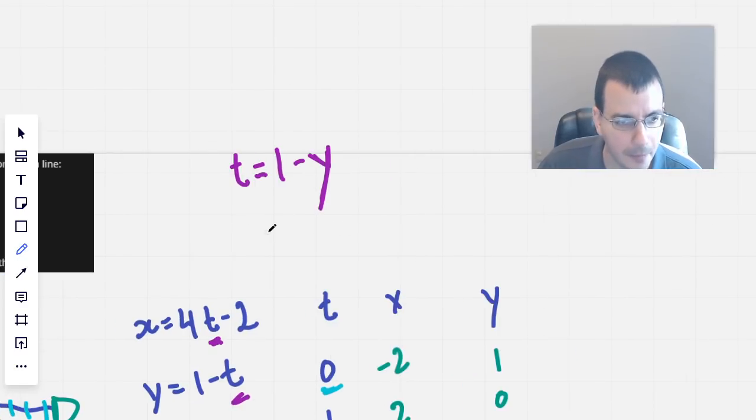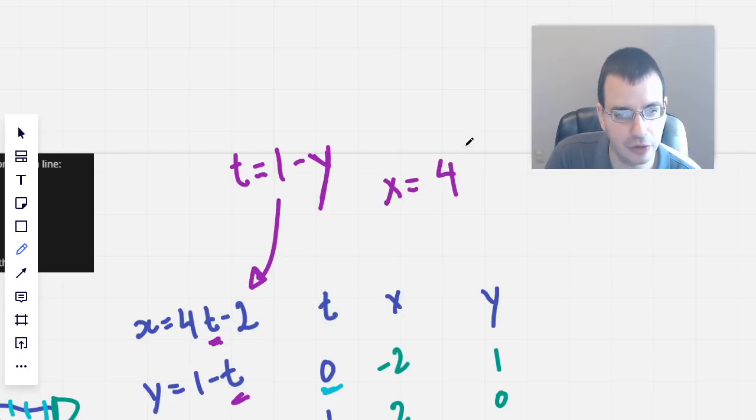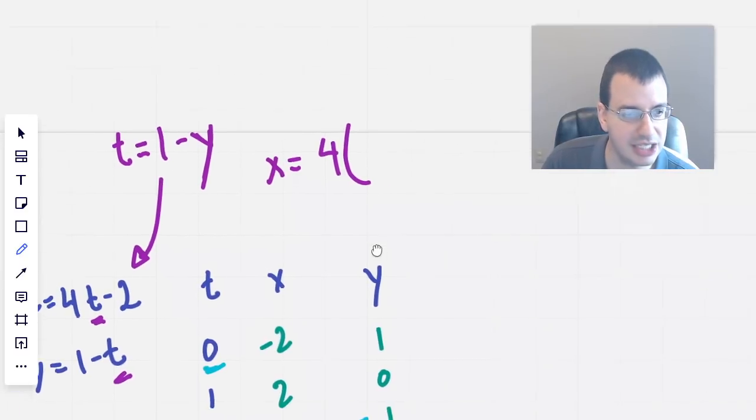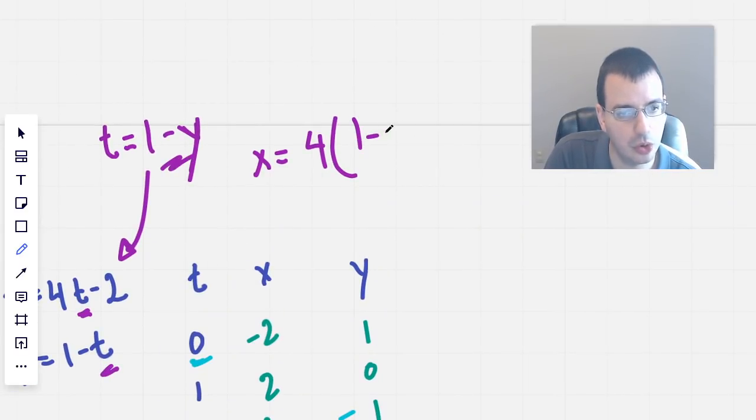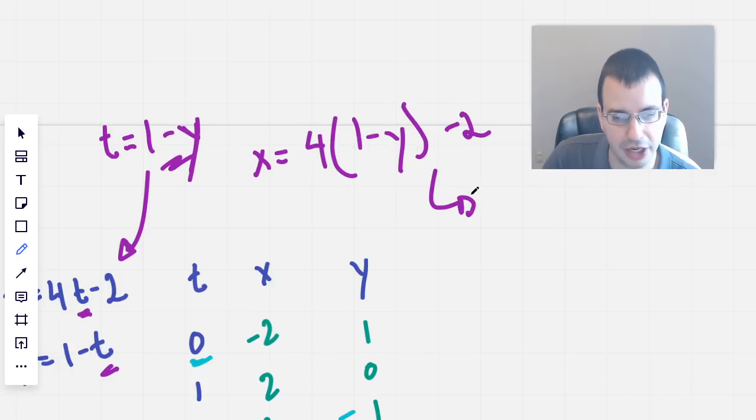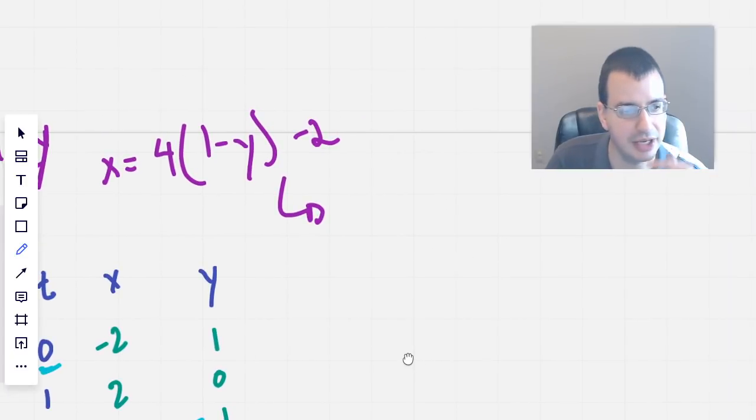Moving that around, we have t equals 1 minus y. I subtracted, or added t to both sides and then subtracted y from both sides. The y's cancel, the t would cancel. Everything mixes together. Algebra. Hopefully you understand that.